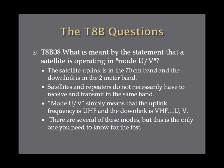What is meant by the statement that a satellite is operating in mode UV? It means the satellite uplink is in the 70-centimeter band and the downlink is in the 2-meter band — UHF uplink and VHF downlink. Satellites and repeaters don't necessarily have to receive and transmit in the same band. There are several different modes like this, however this is the only one you need to know for the exam.